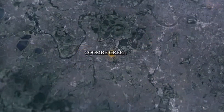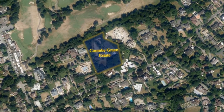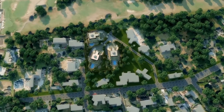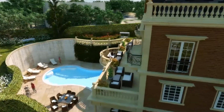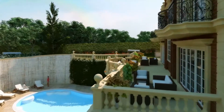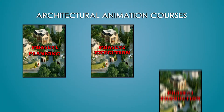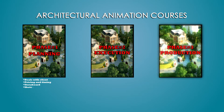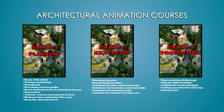This course is based on a project for 3 villas in a place near London called Combi Green. I broke down the process into simple steps that you can apply to any architectural projects. To make it even easier, these steps were simplified into 3 courses, each focusing on a specific phase of making animation videos.